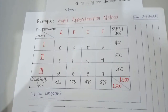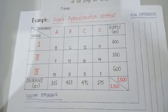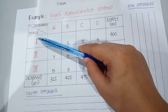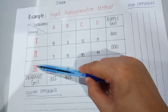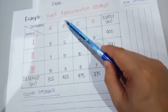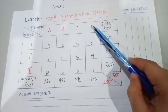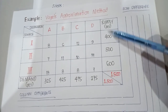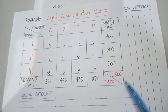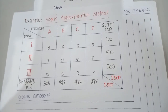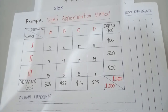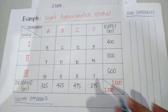This example is quite similar to our previous methods. We have three different sources — first, second, and third source — and four destinations: point A, point B, point C, and point D. We also have a column for supply and a row for demand in terms of pieces. This is a balanced transportation problem because total supply equals total demand.